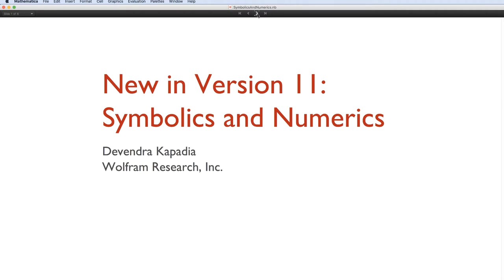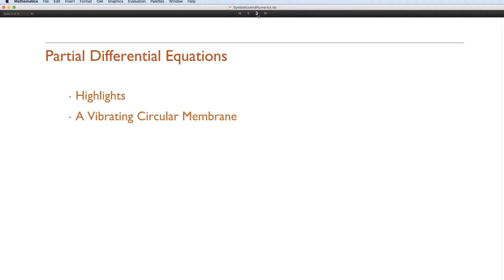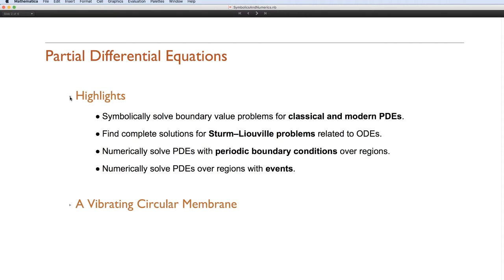So let's begin with partial differential equations. Now the highlights in this area, first of all, D-solve can now find symbolic solutions of boundary value problems for classical and modern PDEs. Now by classical I mean things like the heat, wave and Laplace equations. And on the modern side, we've got the Schrodinger and other PDEs. The whole field of symbolic solutions of PDEs depends upon Sturm-Liouville problems and we can solve these with D-solve as well.